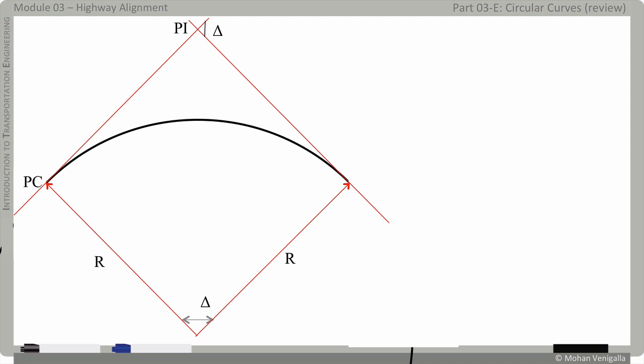And the beginning of the curve is PC for point of curvature and end of the curve is PT for point of tangency and the tangent length PC to PI is T and PI to PT is also T and that's the property of circular curves.